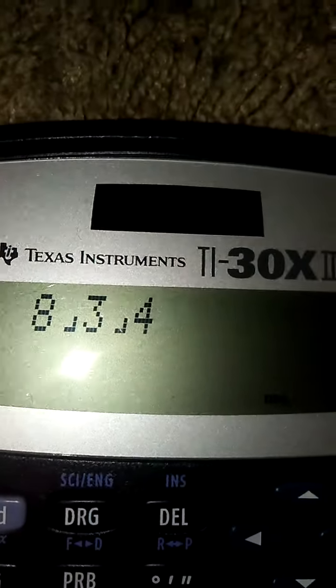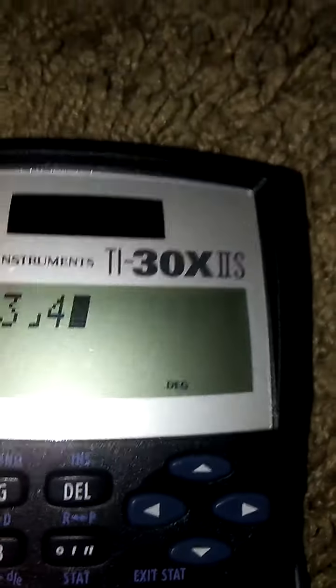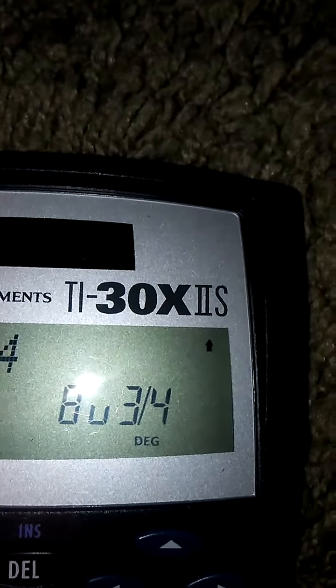And once when you've done that, it will show this instead of a fraction bar. Once when you simplify it, well, you can't simplify 3 fourths. And you get 8 and 3 fourths. As you can see right here, 8 and 3, 4.